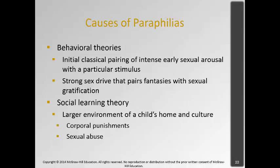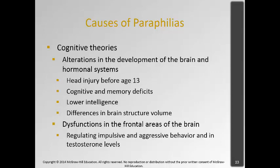The causes of paraphilias are still somewhat unknown. Behavioral theory suggests classic conditioning — the pairing of intense early sexual arousal with a particular stimulus, or a strong sex drive that pairs fantasies with sexual gratification. Social learning theory suggests the larger environment of a child's home and culture could cause paraphilia development — for example, corporal punishment could start masochism, or sexual abuse. Cognitive theories include alterations in brain development and hormonal systems: head injury before age 13, cognitive and memory deficits, lower intelligence, differences in brain structure, and dysfunctions in the frontal lobes that regulate impulsive and aggressive behavior, along with testosterone levels.